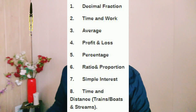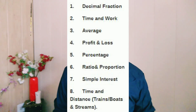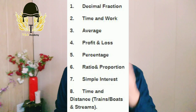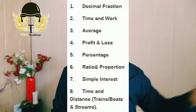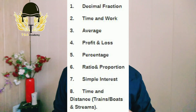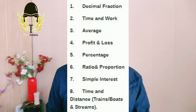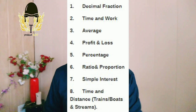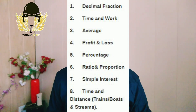The AFCAT mathematics syllabus includes: simple interest, compound interest, profit and loss, discount, time and distance, boats and streams, problems based on trains, problems based on ages, time and work, percentage, decimal and fraction, and average. These are the chapters you need to study. You do not need to read the entire book.